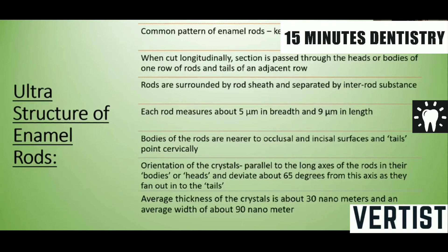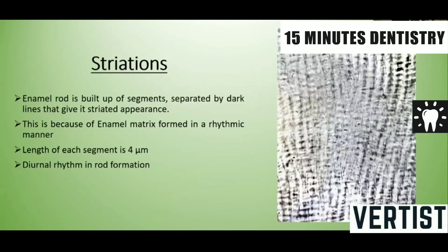The bodies of the rods are nearer to the occlusal and incisal surface, and tails point cervically. Regarding the orientation of the crystals, they are oriented parallel to the long axis of their bodies or heads, and they deviate about 65 degrees from the axis as they fan out into the tails. The average thickness of the crystal is about 30 nanometers and the average width is about 90 nanometers.